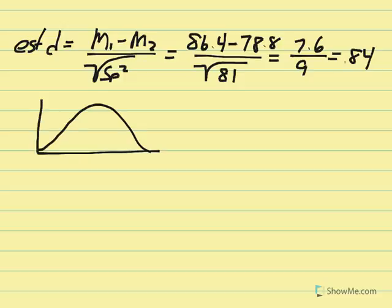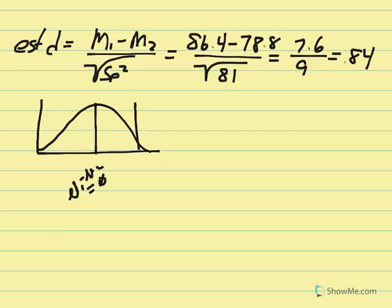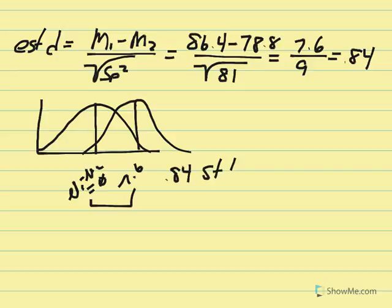The null states mu1 minus mu2 equals zero. Our sample difference of 7.6 is expressed in standard deviation units: 0.84 standard deviation units. In other words, the distribution of mean differences shifted 0.84 standard deviation units upward as a result of the music condition — those who listened to music performed better and the population of mean differences shifted accordingly.